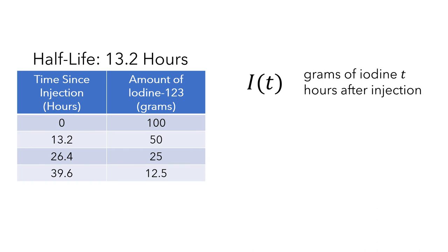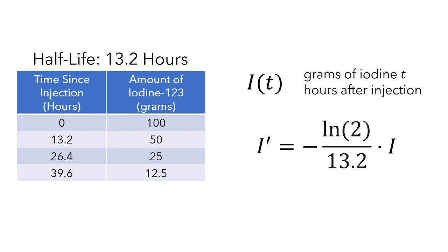So as the amount of iodine decreases, the rate also decreases. This is a proportional relationship between the amount of iodine and the rate of decay. So if I' is the rate at which the amount of iodine is decreasing, then this rate is directly proportional to the amount of iodine left. Since the rate is decreasing, we'll specify this with a negative sign. It turns out that the constant of proportionality is equal to the natural log of 2 divided by the half-life, and the units for this rate of change are in grams per hour. Like the previous example, this differential equation models a scenario where the rate of change of a function depends on the value of the function.